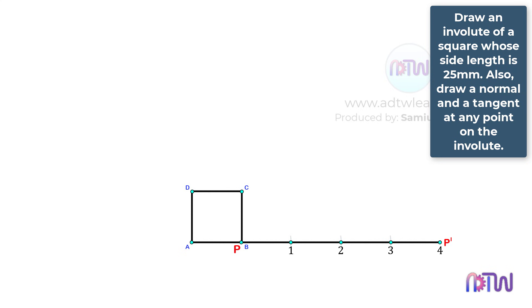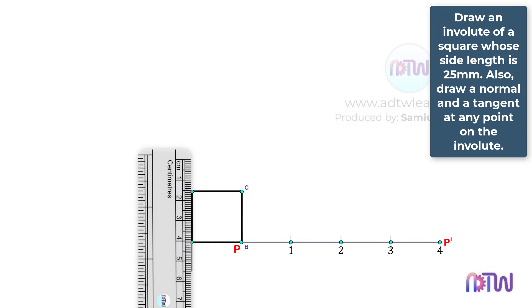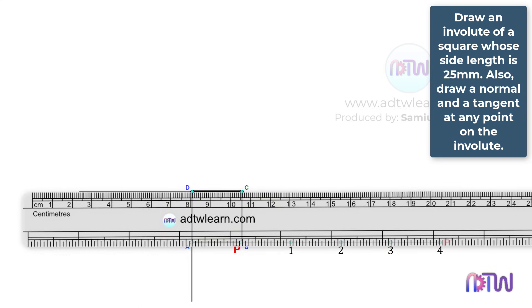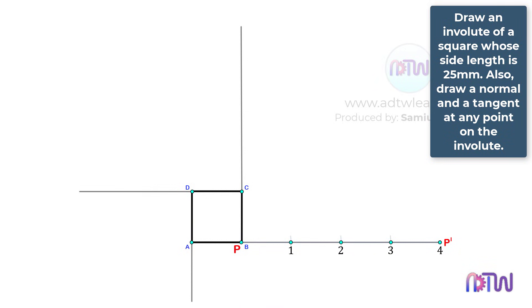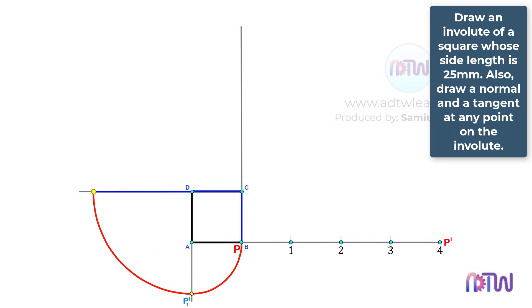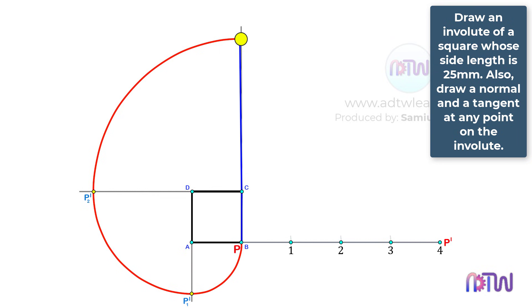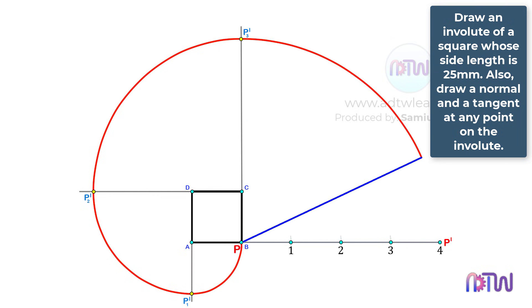We have to extend the lines from these points. Initially, the endpoint of the string is here. When we unwind and it reaches this line, the point P will be here. When we unwind it further, point P will be here. If we further unwind, the point P will be here. And at the end, it will reach here on this horizontal line.